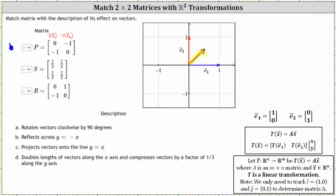By studying the original vectors and the transformations, we want to describe the effect. We'll notice here, if we graph the line y equals x, which is a line with a vertical intercept of zero and a slope of one, both vectors are projected onto the line y equals x. Therefore we select C as our answer.